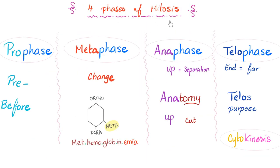The cell cycle is divided into the interphase and the M phase, or mitosis. Mitosis itself is subdivided into four phases: prophase, metaphase, anaphase, and telophase. For some weird reason, this topic drives students nuts — the reason why is that they don't get the language. If you understand what these words mean, it becomes a piece of cake. Trust me.